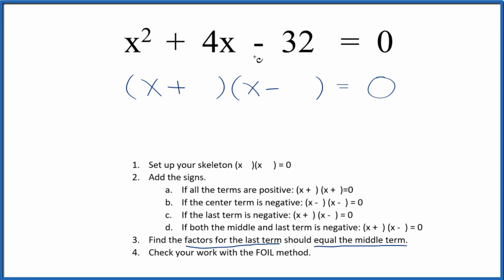2 times 16. That can't add up to 4. 8 times 4. That could work because we could put 8 here and 4 here. 8 and negative 4. That would give us our 4 for the middle term. So this is how we would factor this equation, x squared plus 4x minus 32.